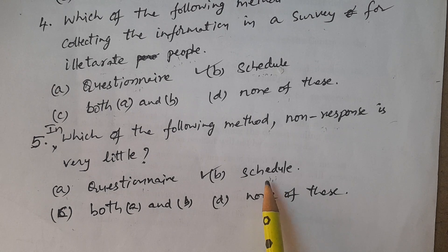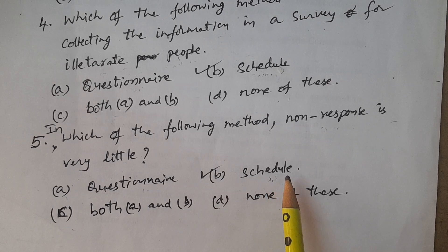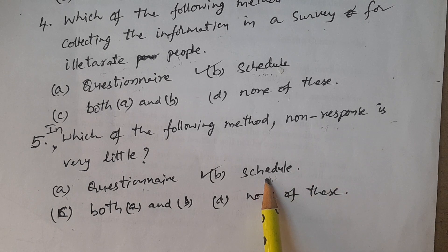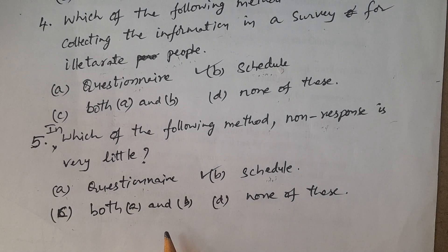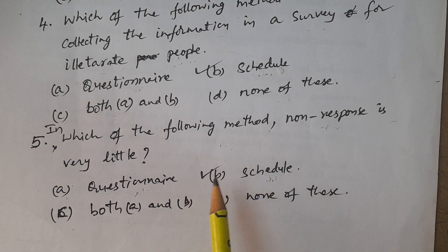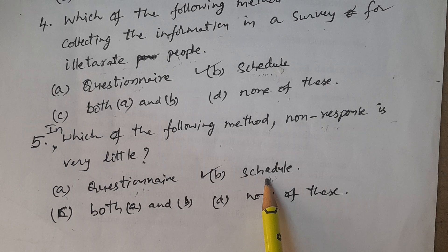In the schedule method, the investigator goes to each respondent and collects information from every individual. Therefore there is scope to collect information from each person, and non-response is very little. Whereas in the questionnaire method, response is at the will of the respondent — they may or may not respond — so non-response is more in the questionnaire method.